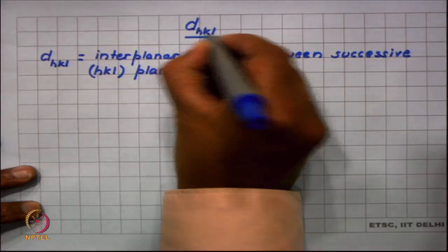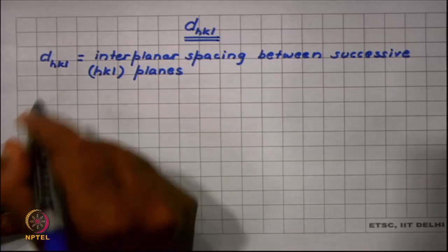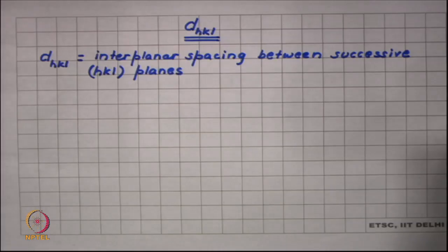This interplanar spacing has a universal symbol d_hkl. It is the interplanar spacing between successive HKL planes.